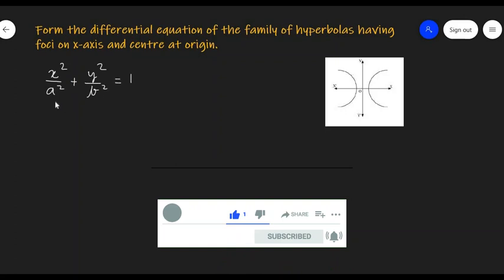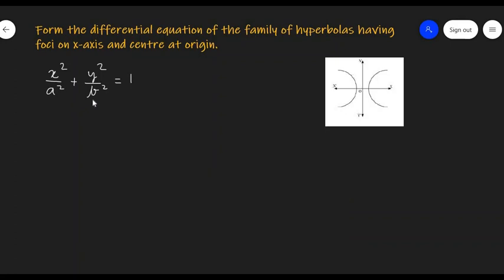We see that this equation has two arbitrary constants. So the differential equation will be of order 2, and we will need to differentiate this two times. Let's call this equation number 1 and start differentiating.